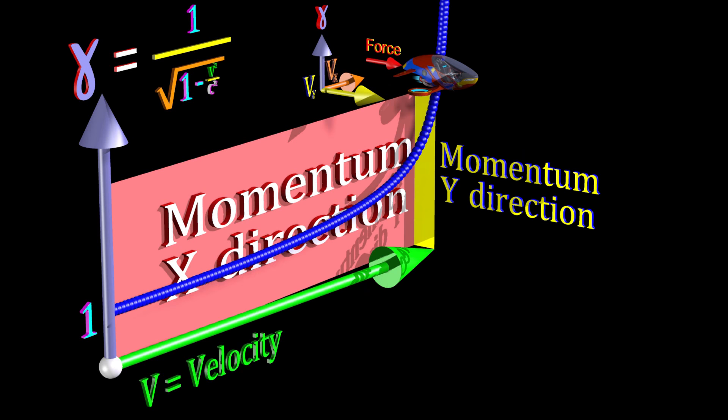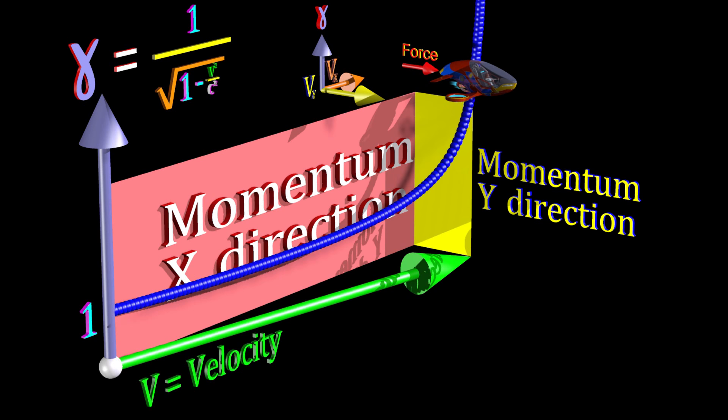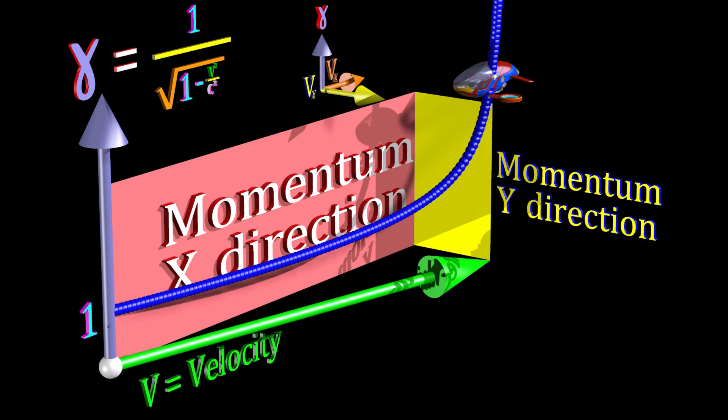When the force is exactly perpendicular to the velocity, the rate of change in gamma is negligible. The momentum in the y-direction is proportional to the area of this yellow rectangle.